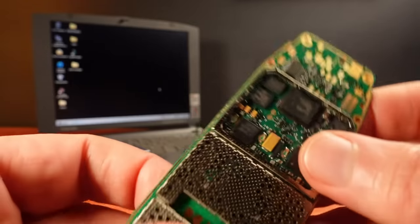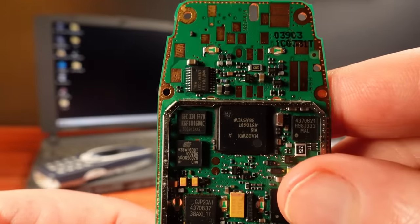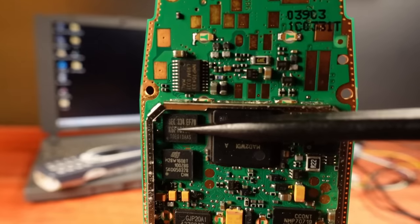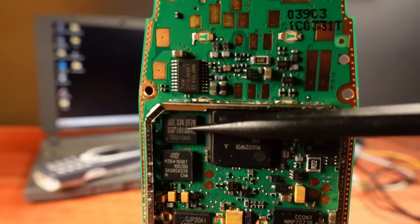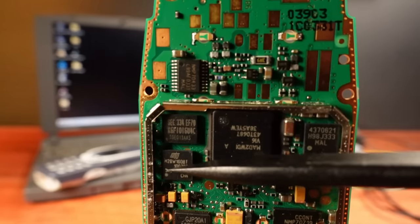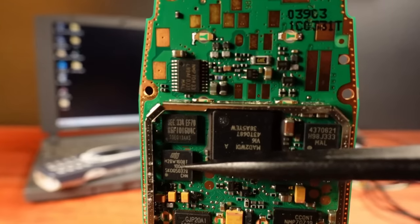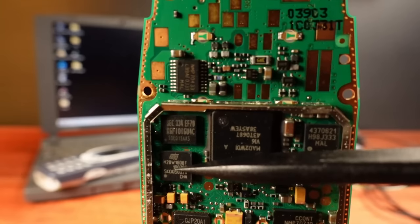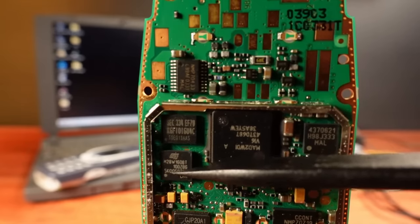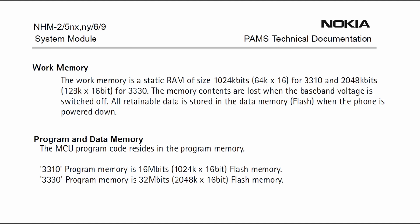In the previous video I made a mistake. When swapping the main boards I pointed to the flash memory chip in the 3310, but I was instead pointing to the RAM chip. The flash chip is here next to the RAM chip. I've since learned that not only is the flash chip different between models but the RAM chip is also different. The 3310 has 128 kilobytes of RAM and the 3330 has 256 kilobytes of RAM. The 3350 also uses 4 megabytes of flash and 256 kilobytes of RAM, just like the 3330.